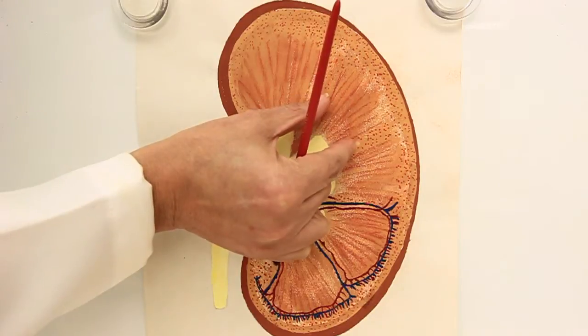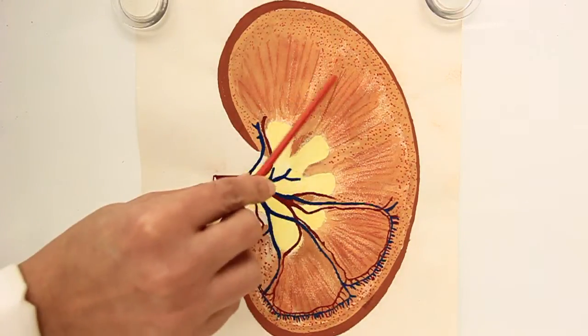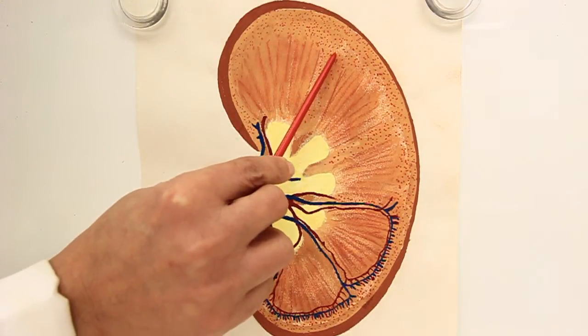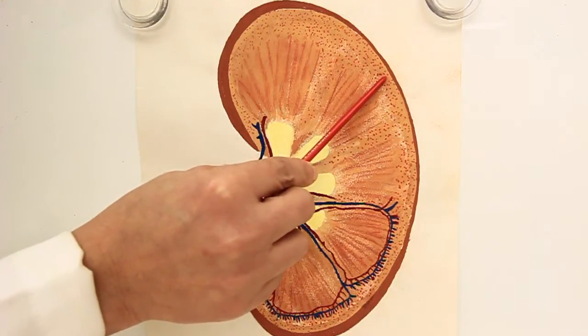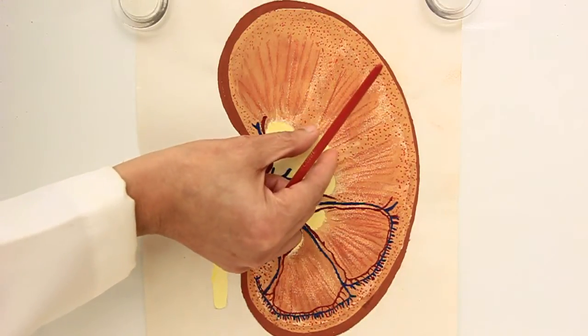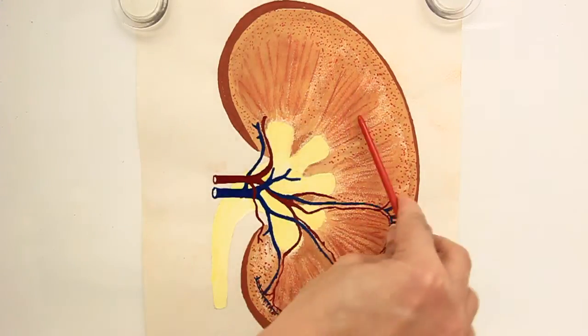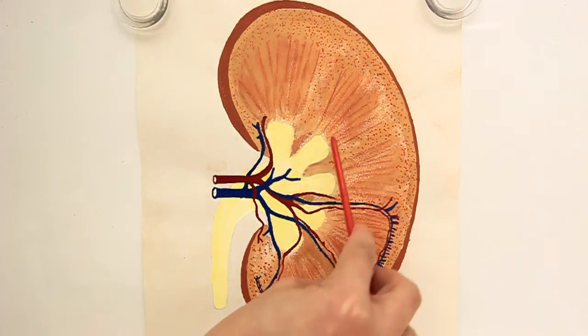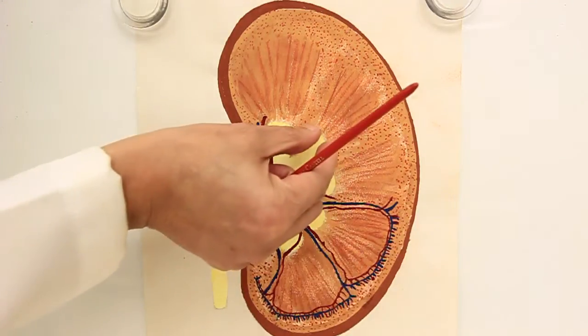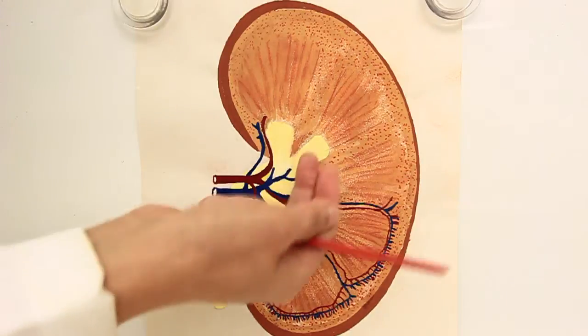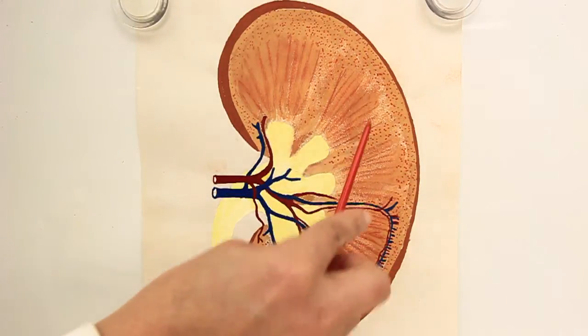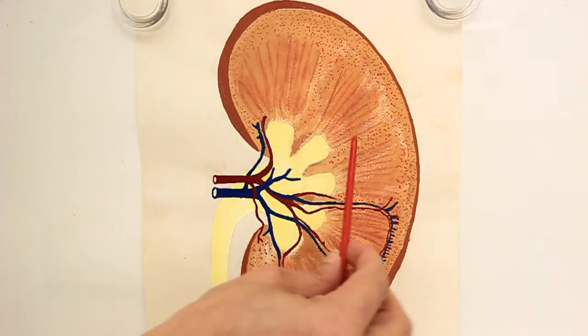They are known as renal pyramids. If you look at the pyramid, each pyramid is having a base facing the cortex and its tapered off apex is facing inward and actually opening up into a tube-like structure that's minor calyx, one part of the collecting system.